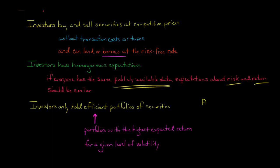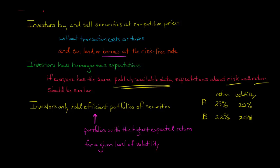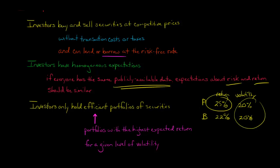For example, consider Portfolio A and Portfolio B, each with a volatility of 20% — the same total risk. Portfolio A has an expected return of 25%, while Portfolio B has an expected return of 22%. Why would anyone hold Portfolio B? Since both have the same risk, investors would only hold Portfolio A because it offers the higher return.